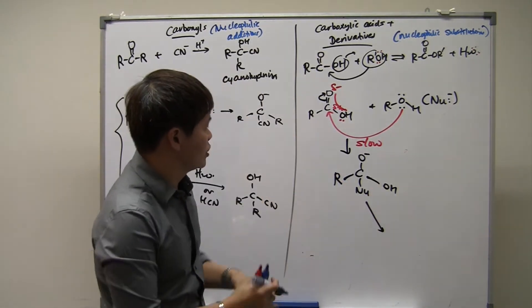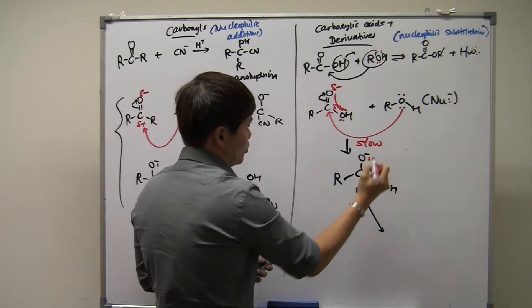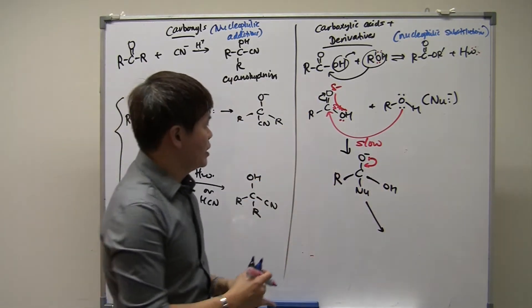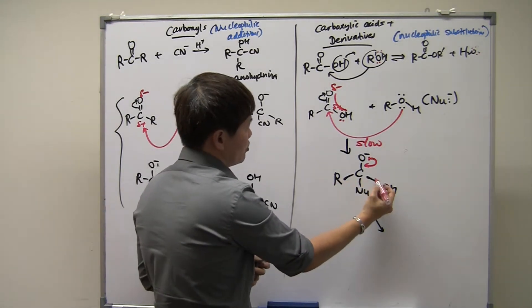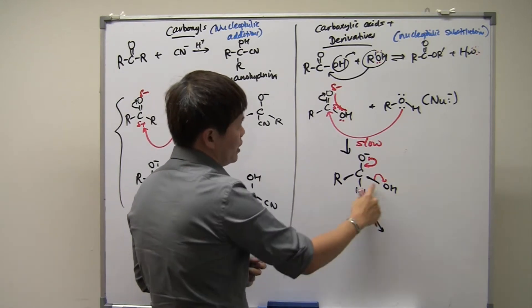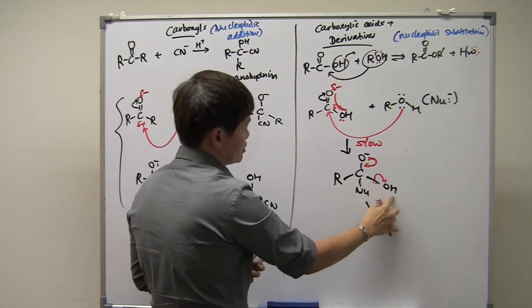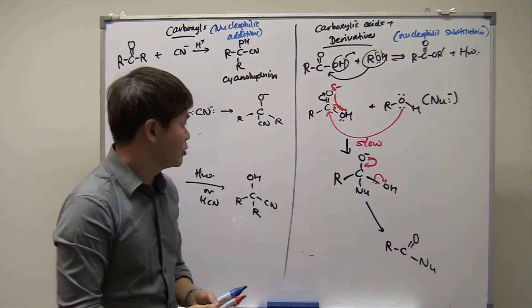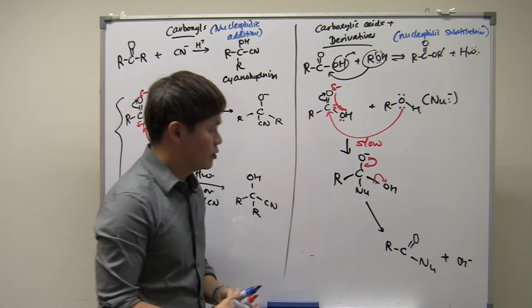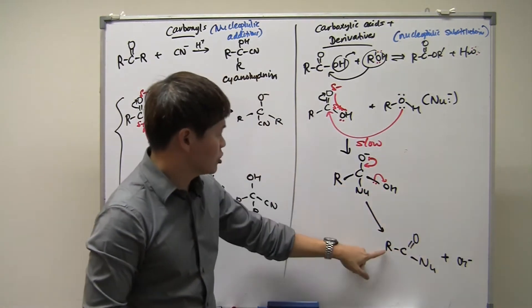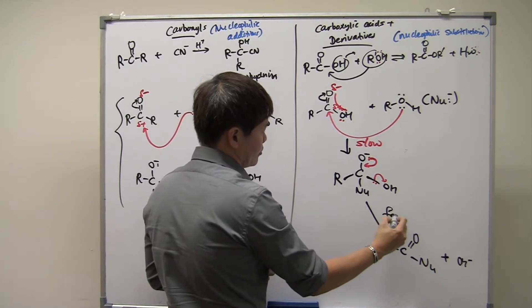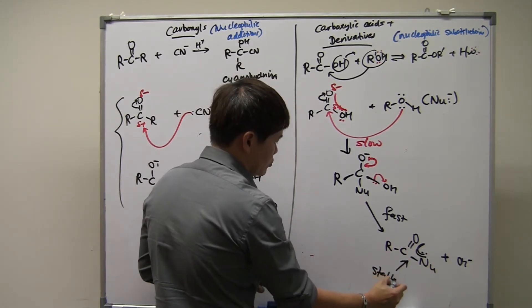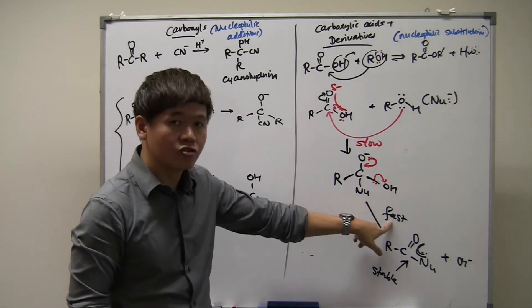What happens next is the compound tries to revert back to its original stable structure. One of the lone pairs on oxygen comes back to reform the double bond — it wants to recreate resonance. In return, the carbon must give up a bonding pair of electrons: the OH group leaves, and those two electrons go out. This step is very fast because forming the resonance-stabilized structure makes the Gibbs free energy very negative.